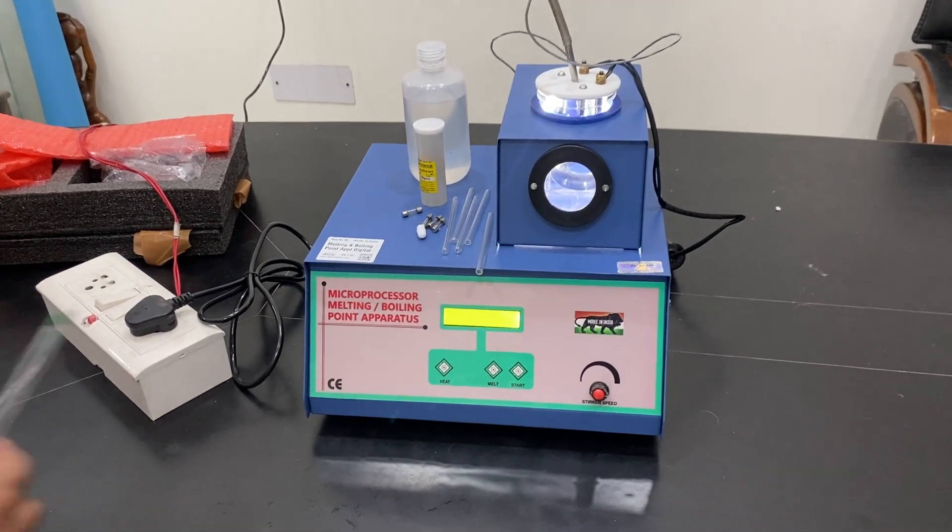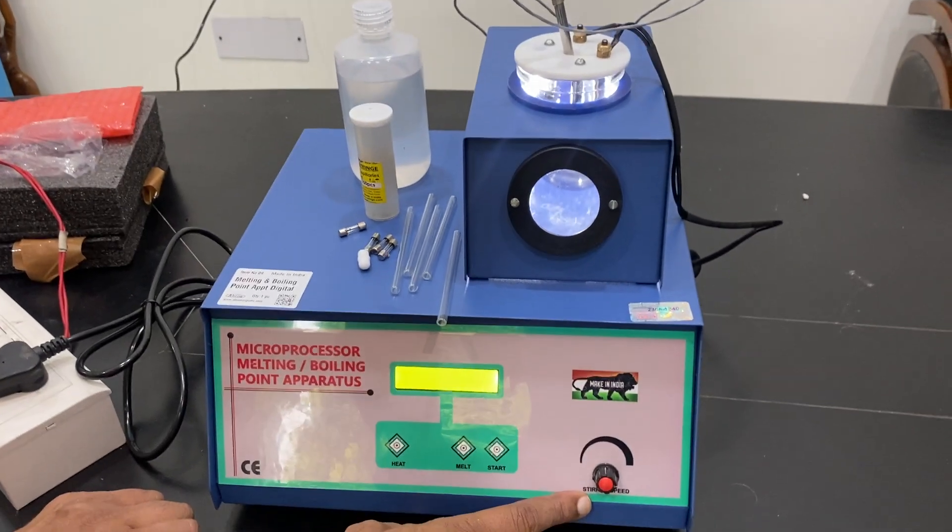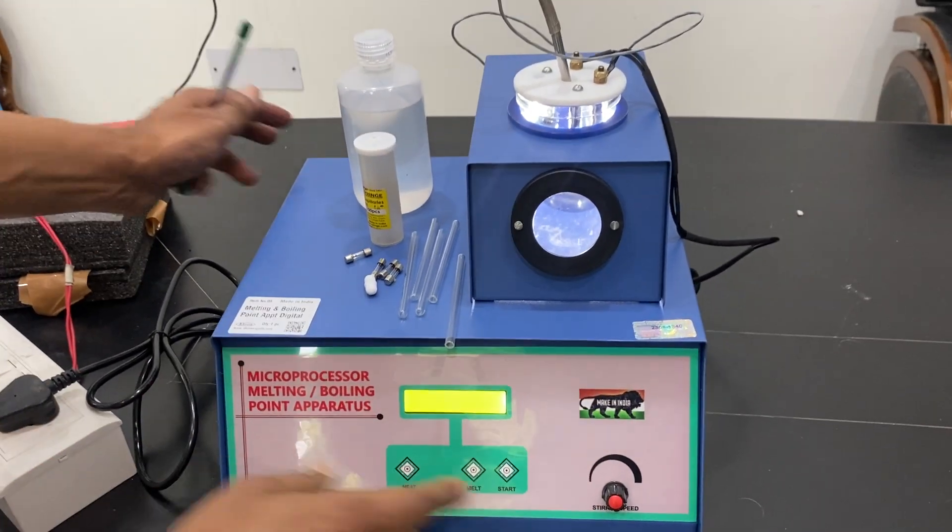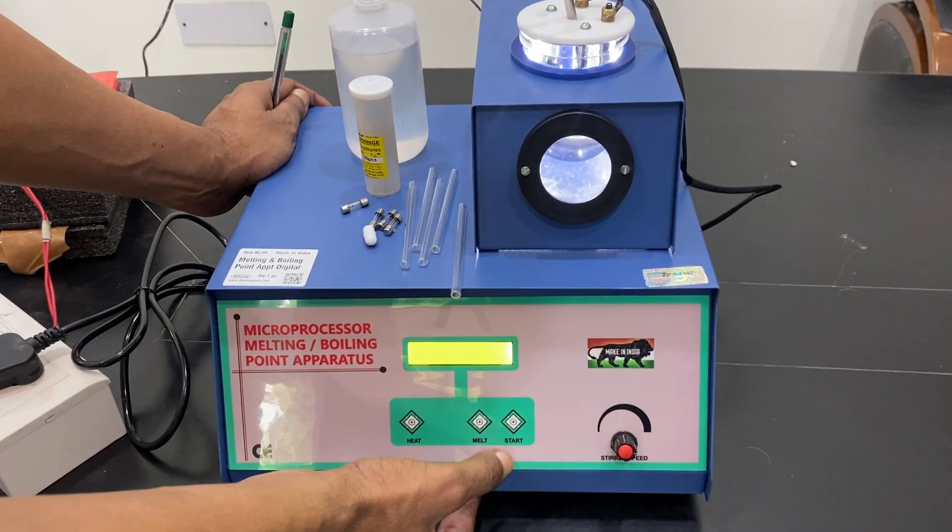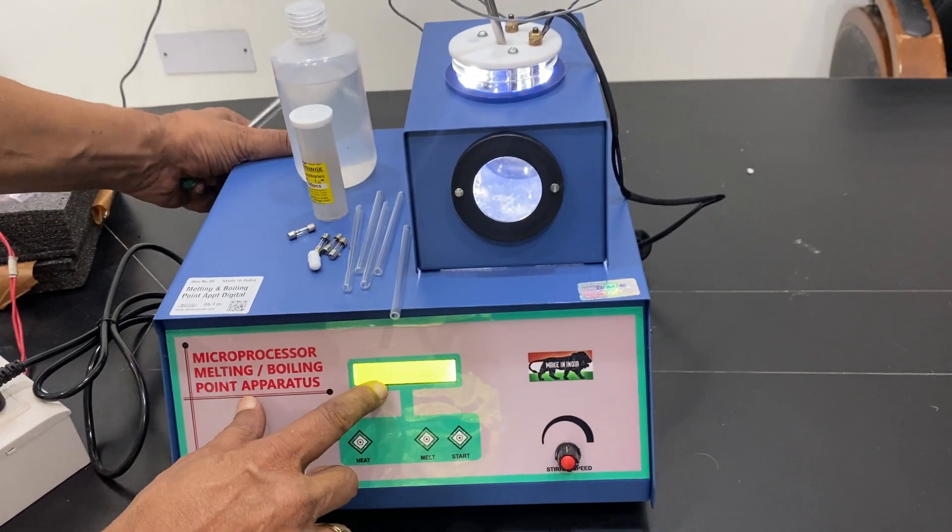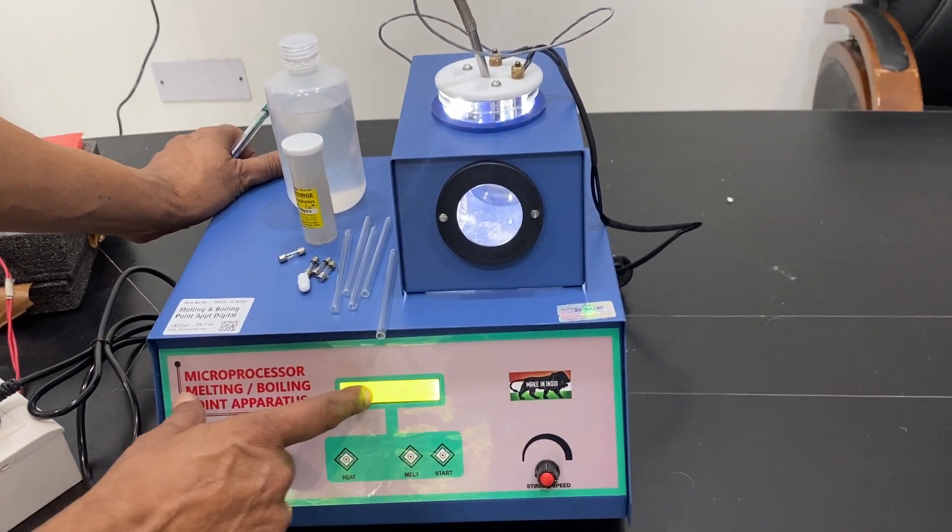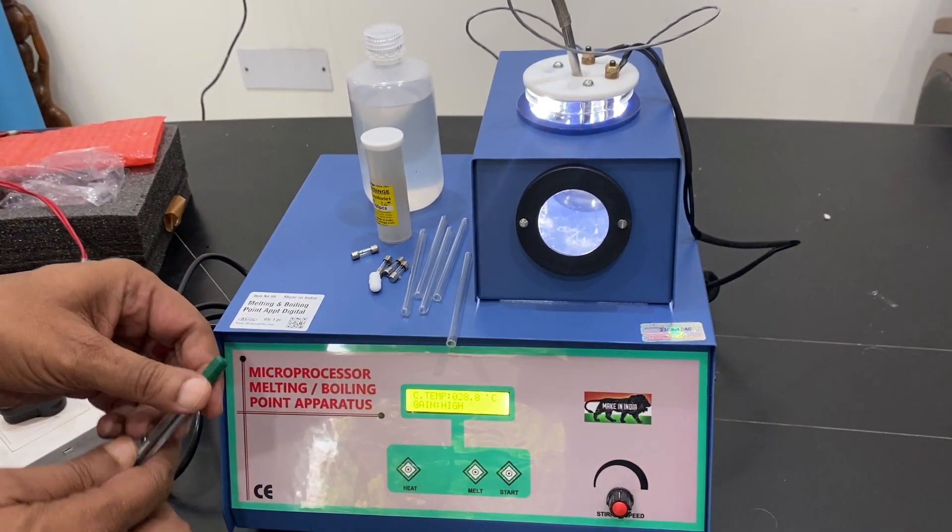This is the automatic melting point apparatus. We have a microprocessor-based melting point apparatus. Here we have a stirrer with speed indicator, and this one is the heating start. You can start the heating and melting process when you switch on this instrument. It will give you the microprocessor-based melting point and boiling point apparatus. Both are there.